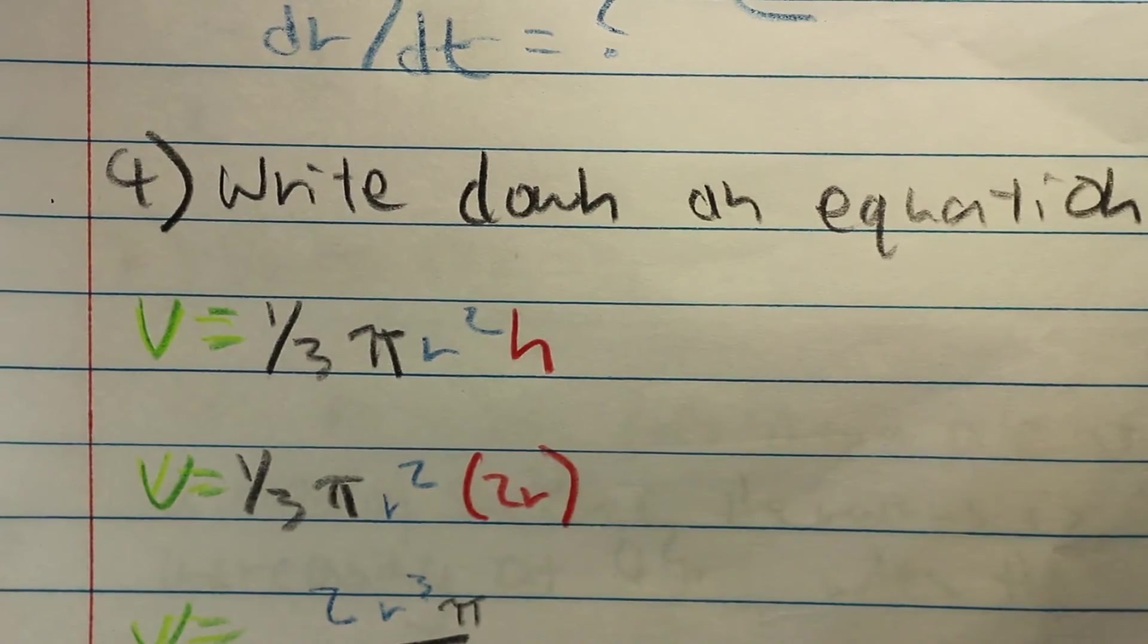Afterwards, we can write down an equation to represent the entirety of the problem. In this case, we have a cone, which will be represented by the cone volume formula, V equals 1/3 π r² h. However, we are solving this for the rate at which the length of the radius is changing. We need to solve with a single variable. In doing so, we will be able to better solve this problem.